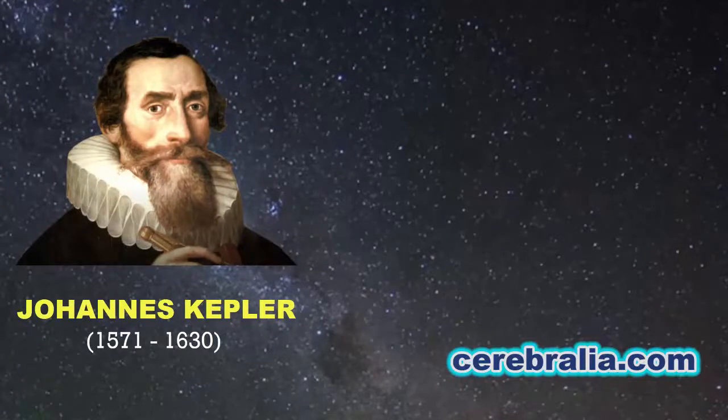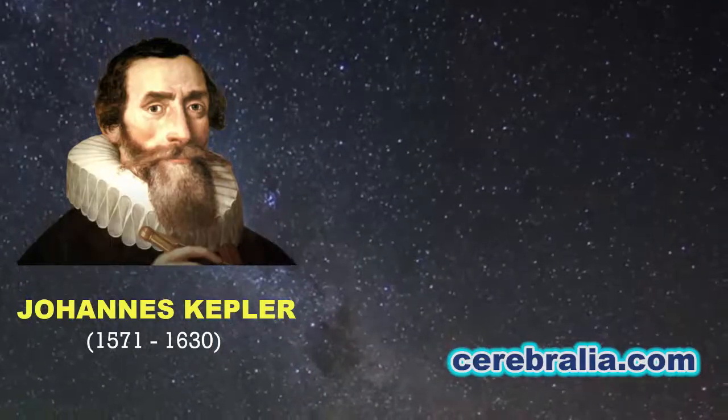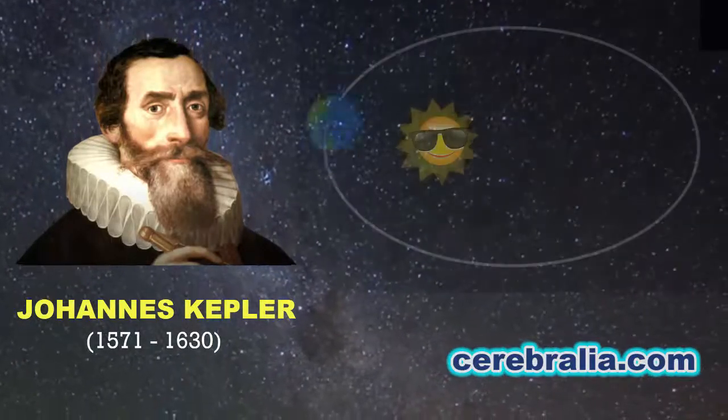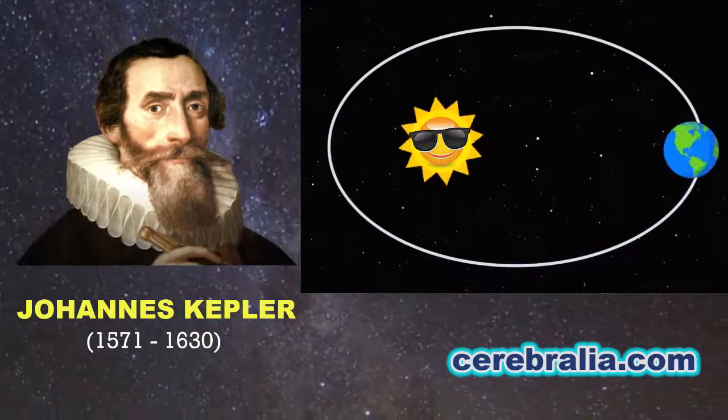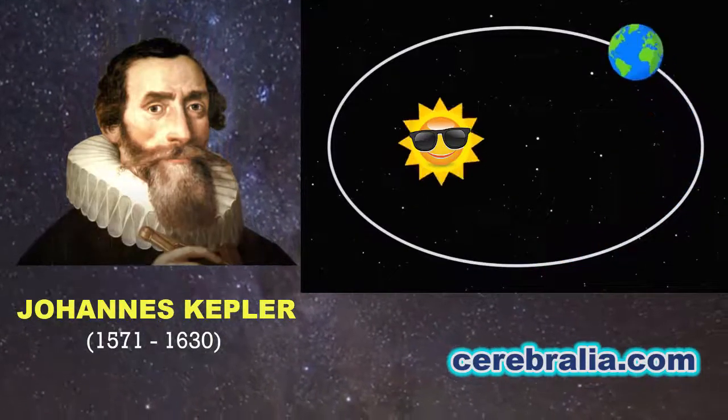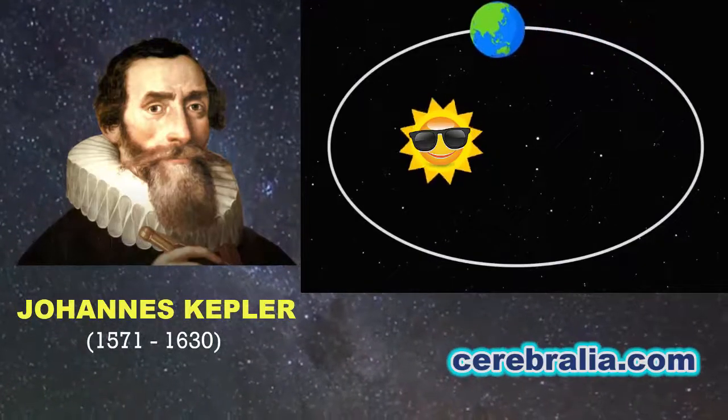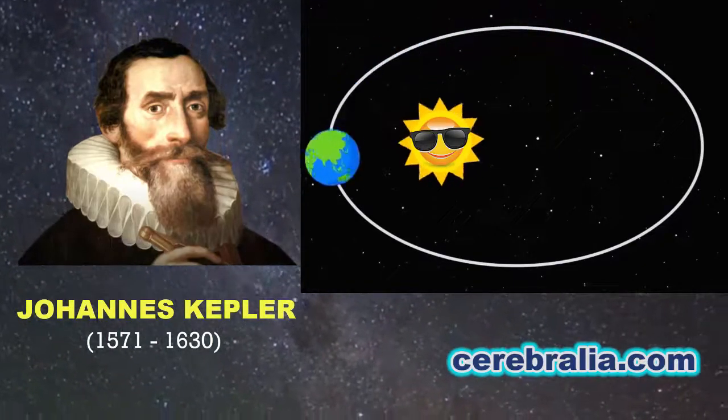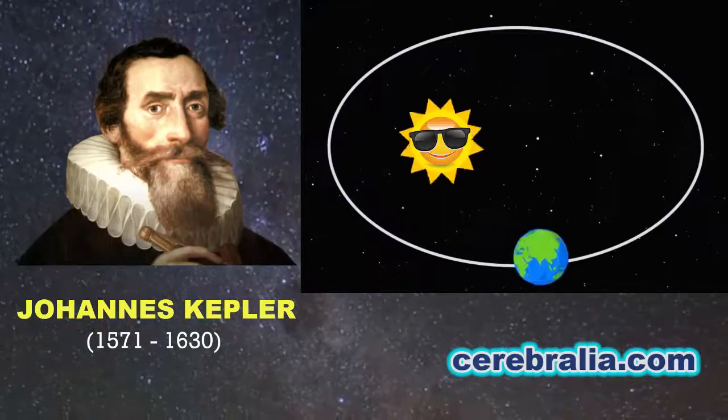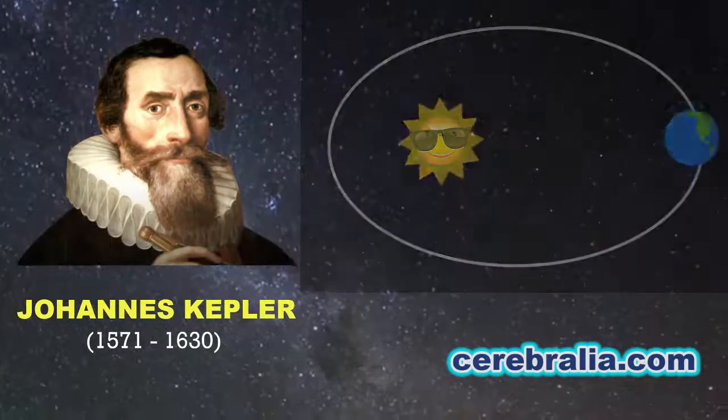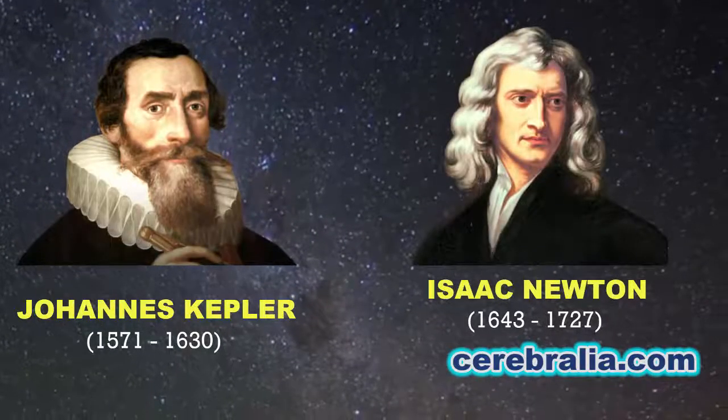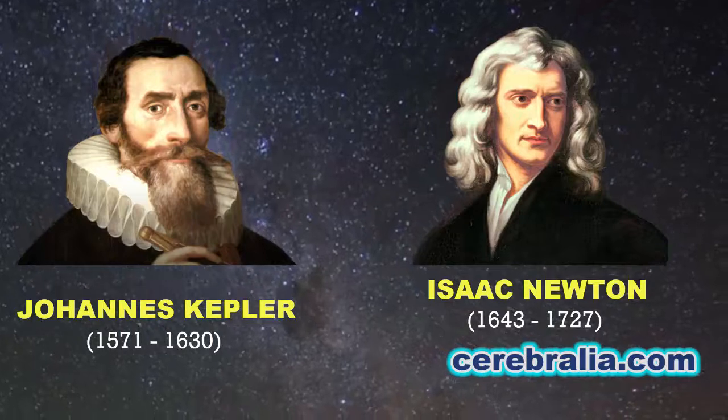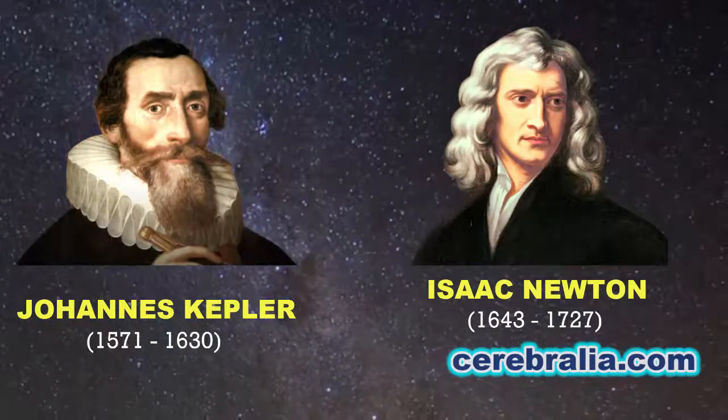Other scientists provided more evidence to support the heliocentric theory. Kepler discovered that the Earth and planets move around the sun in elliptical orbits. He also stated that the planets move faster near the sun and move slowly when they are away from the sun. Years later, Isaac Newton used Kepler's law of planetary motion to develop his law of universal gravitation.